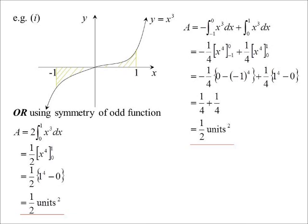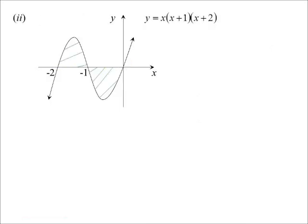Obviously if we don't have symmetry we can't do that. For something like this — there's a bit above and a bit below — I can't just say it'll be twice the integral from minus one to zero. It might turn out that way, but I don't know for sure. So we'll split it up into two areas: the bit above, and then minus the bit below.